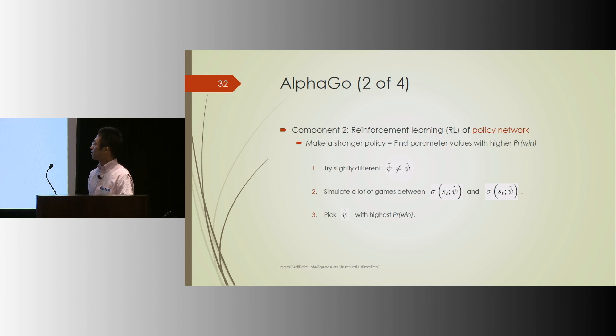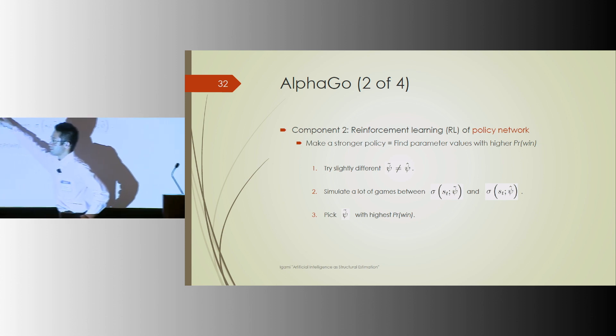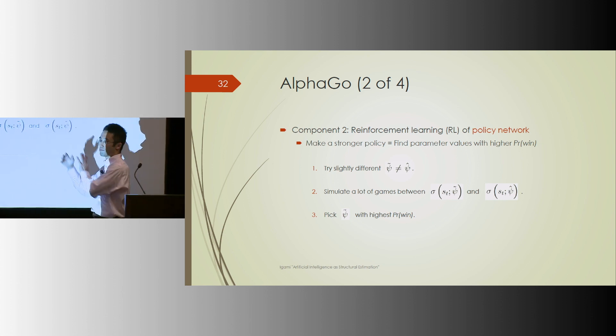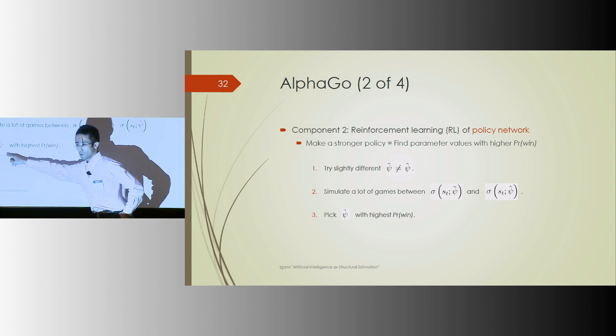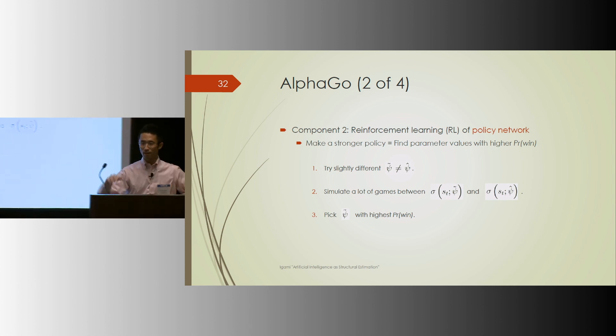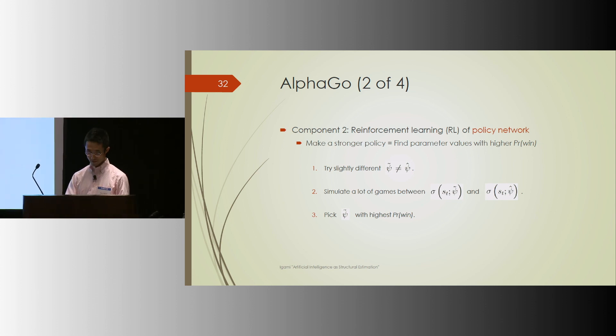Component two of AlphaGo is then reinforcement learning, because the goal of DeepMind, the team, is not to estimate an empirical model of human Go players, but rather their goal was to create a terminator program to beat humans. So starting from the actual estimated policy function, they iterated to find some perturbed strategies or perturbed parameters, simulate lots of games between these programs, and favor altered parameters that would lead to more wins. Slowly, they found some better strategies than what's estimated from the data.